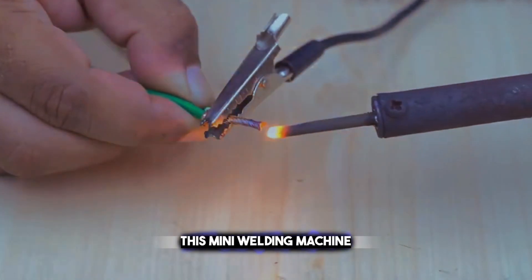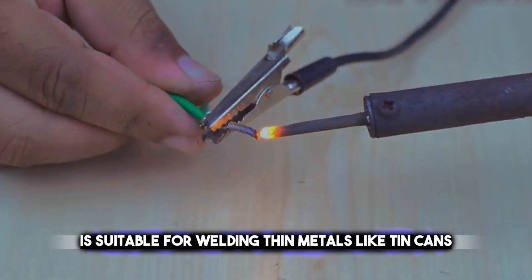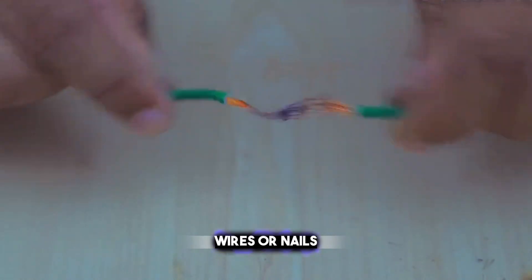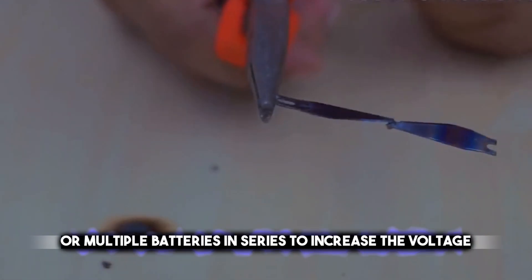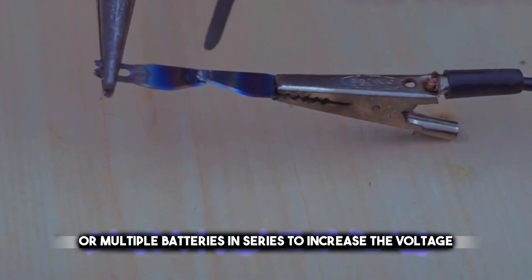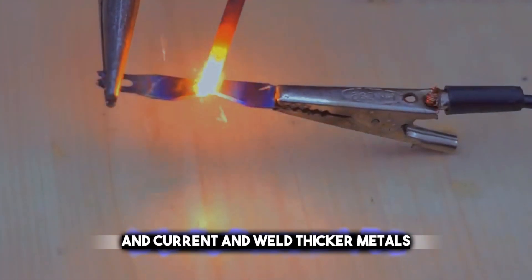This mini welding machine is suitable for welding thin metals like tin cans, wires, or nails. But you can also use a bigger battery or multiple batteries in series to increase the voltage and current and weld thicker metals.